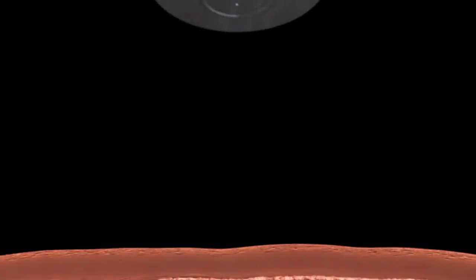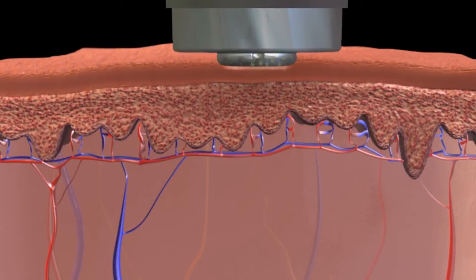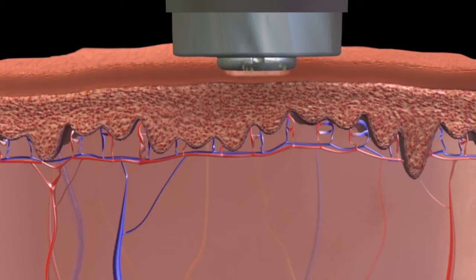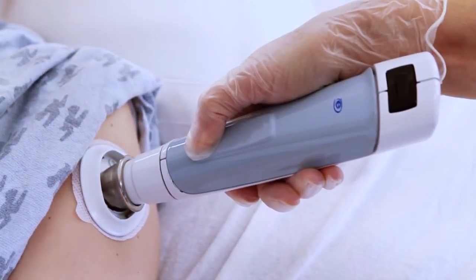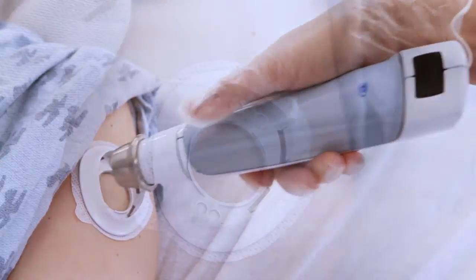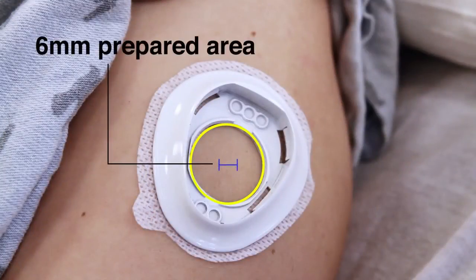Prelude is designed to consistently and precisely remove only the stratum corneum, or dead outer layer of the epidermis, using microdermabrasion. After approximately 10 to 15 seconds, Prelude's patented control algorithm automatically stops at the juncture of the dead tissue and the live tissue. The prepared site is only 6 millimeters in diameter.